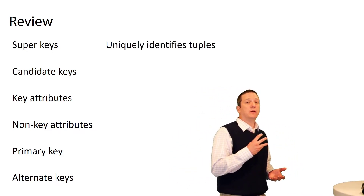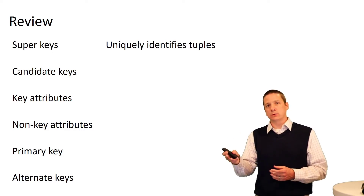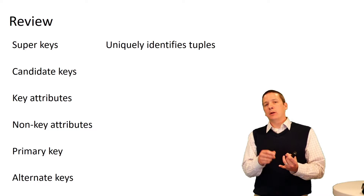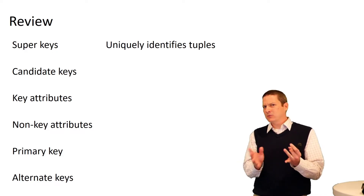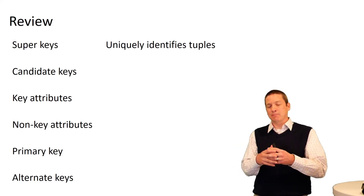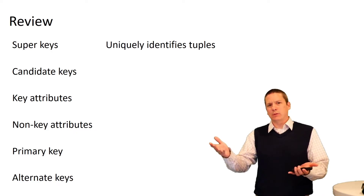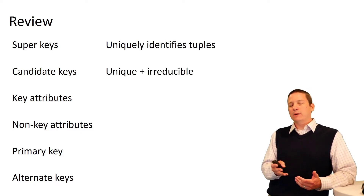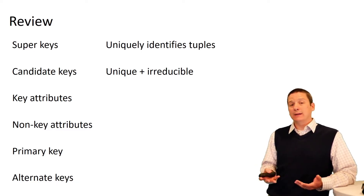Super keys have the property of uniqueness — they can uniquely identify tuples. Any superset of a super key is also a super key. For example, if a PeopleSoft ID uniquely identifies you, then PeopleSoft ID alone is a super key, but so is PeopleSoft ID combined with your first name or your gender — even though gender alone isn't a good identifier since many people share the same gender. Once you have a unique identifier, you can add anything to it and it remains unique, so we'll have many super keys in a relation. A candidate key is more useful: it's a super key that is also irreducible — we can't remove any attributes from it and still maintain uniqueness.